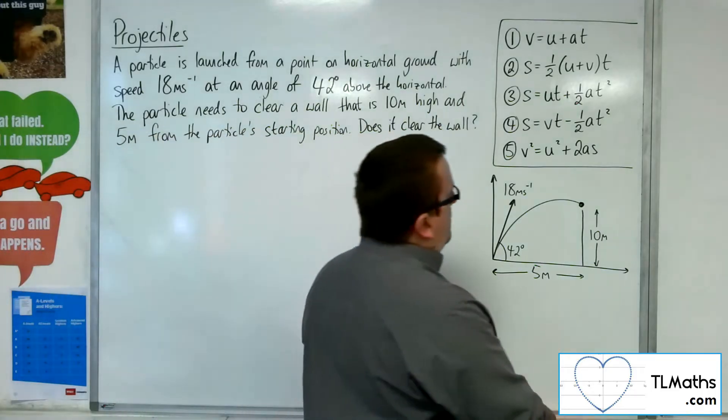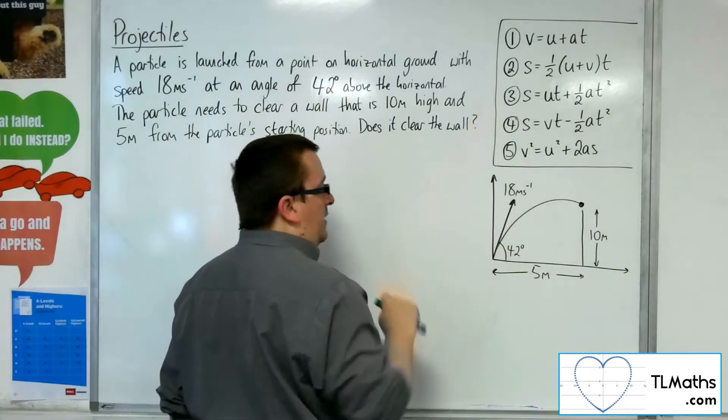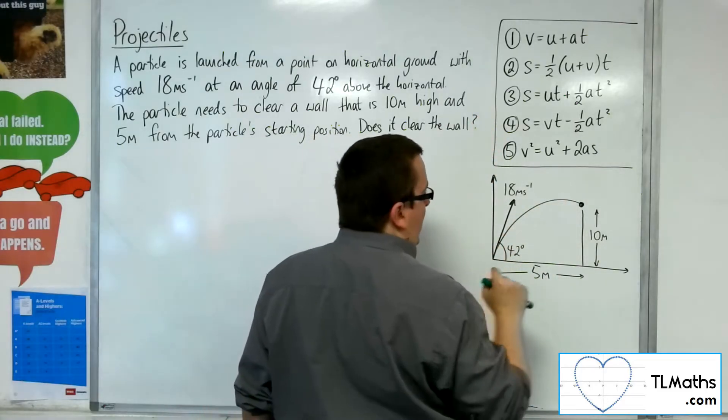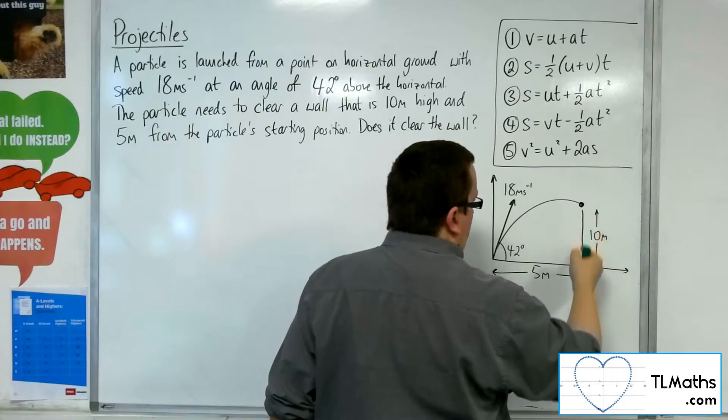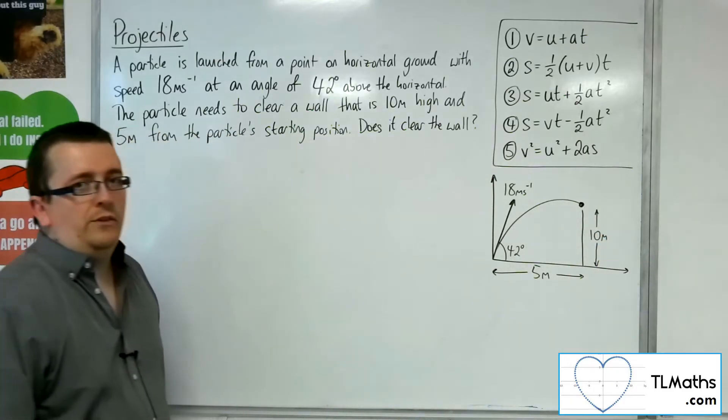So here is the diagram of what's going on here. We're shooting the particle off at 18 metres per second initially at a 42 degree angle, and here is the wall that needs to clear. It's a 10 metre high wall that is 5 metres away from its starting position.